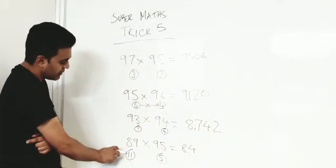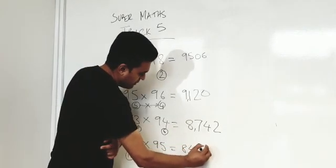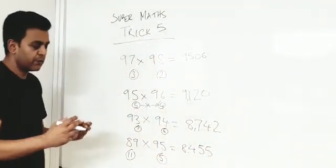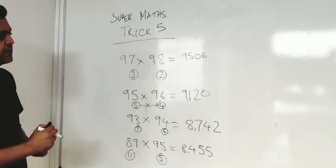Now what's 11 times 5? 55. Now you can try your own two-digit numbers and you'll get the answer if you follow that system.